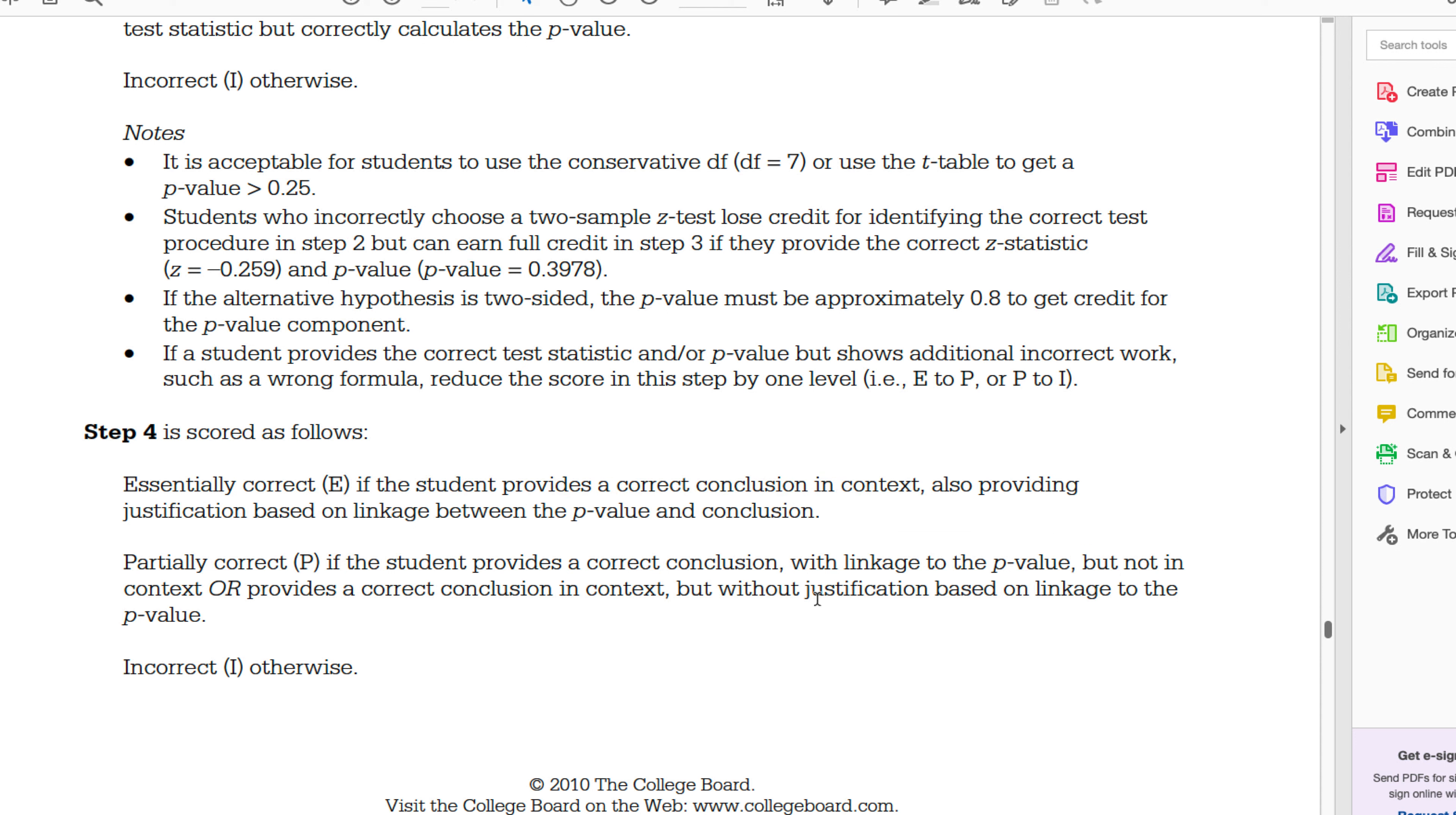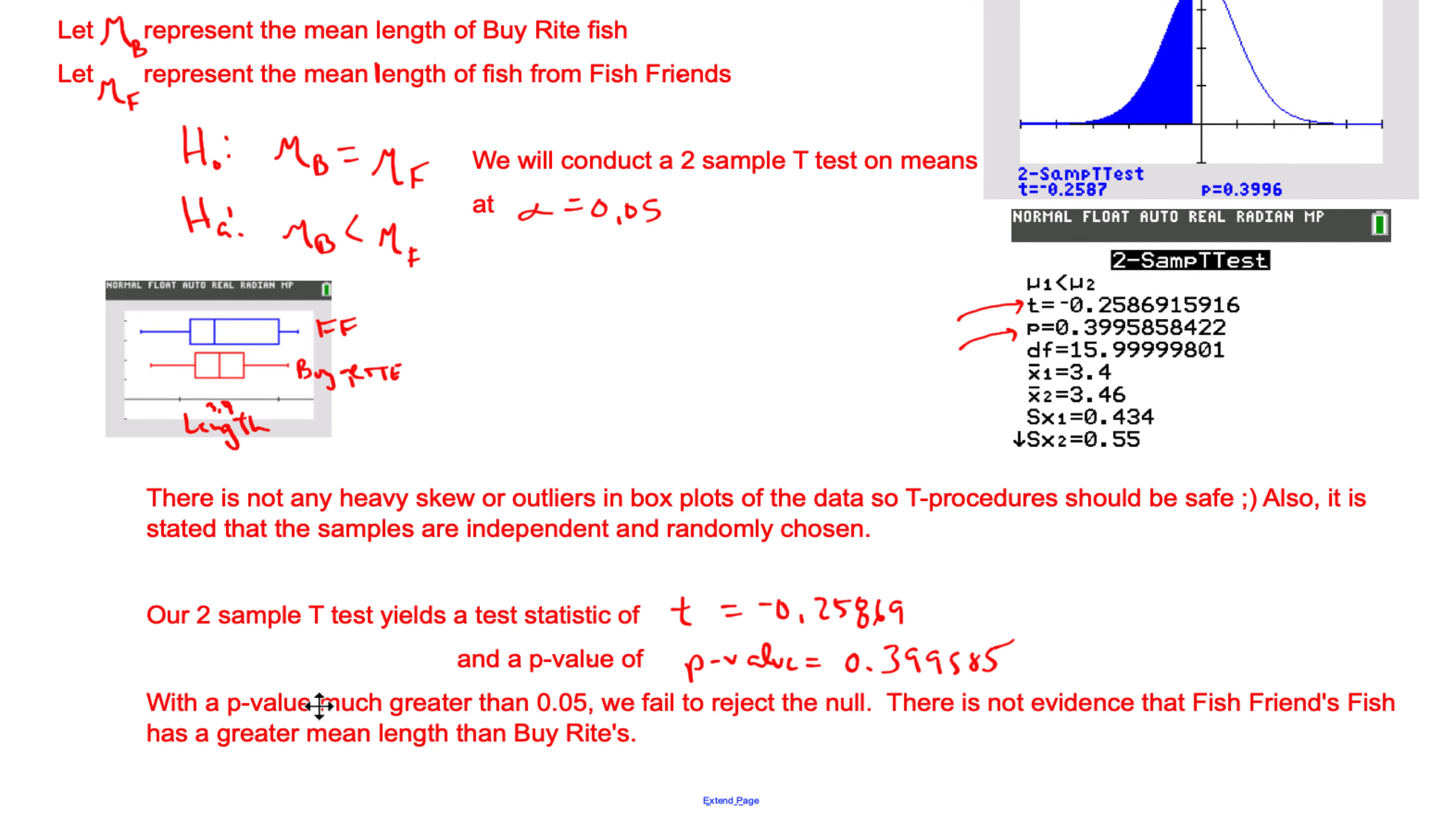And then lastly, you need to make that context statement linkage between the p-value and the conclusion. Because the p-value is not less than 0.05, did we write that? With a p-value much greater than 0.05, there you go, we failed to reject the null. That is number five. That is a classic two-sample t-test with fish. Good luck in your AP Stats, guys.